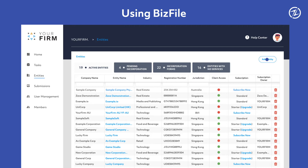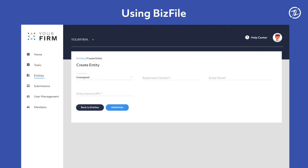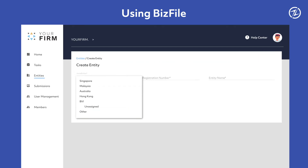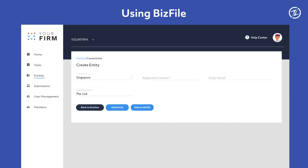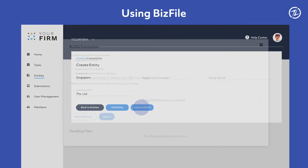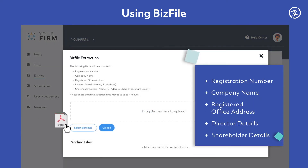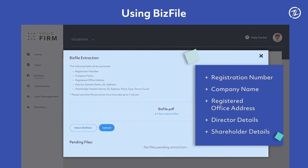If you are adding a Singapore entity and have its biz file on hand, you can simply upload the file onto the platform and it will extract the relevant data, including registration number, company name, registered office address, and director and shareholder details.